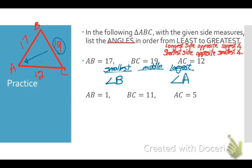My longest side is 19, opposite my largest angle, which is angle A. The only angle missing is C, so that must be in the middle. With side lengths 1, 11, and 5, my shortest side is AB, and opposite AB is angle C — my smallest angle. My longest side is BC, opposite angle A — my largest angle — and that means B is in the middle.